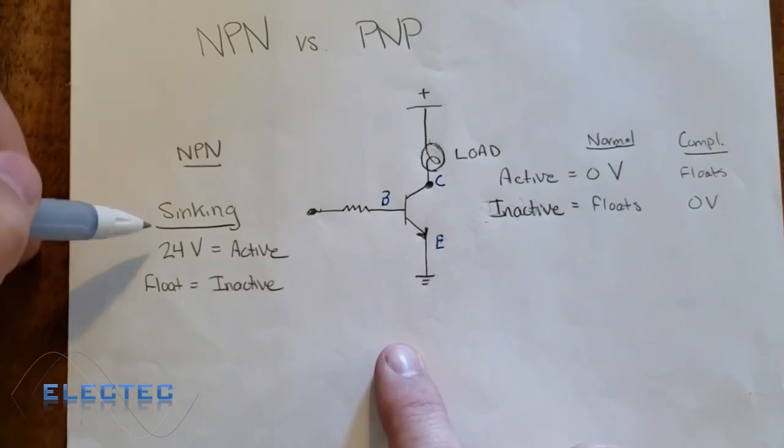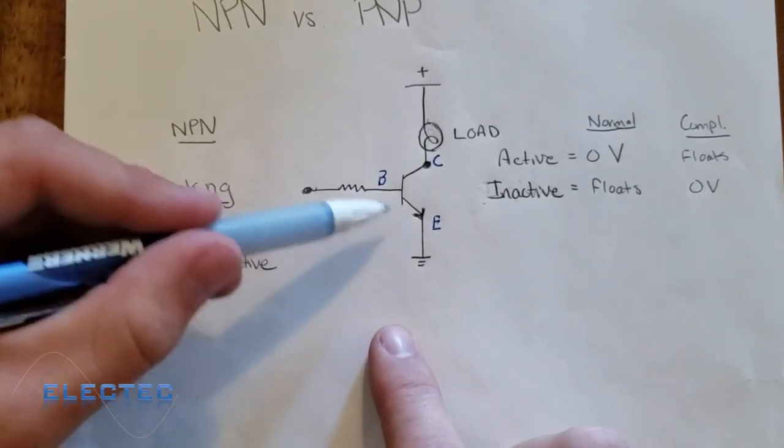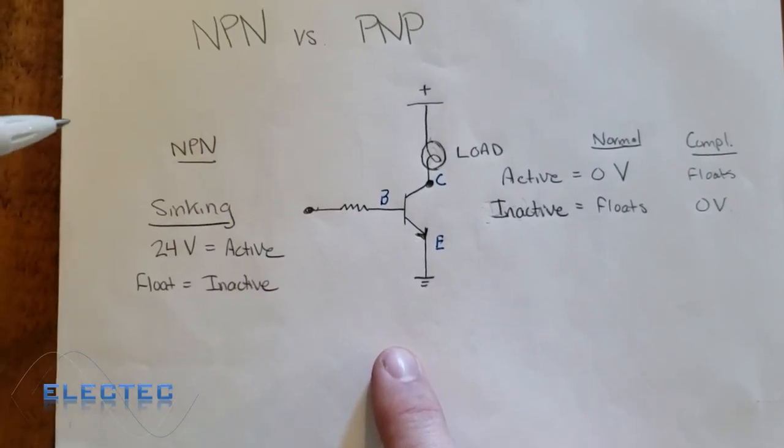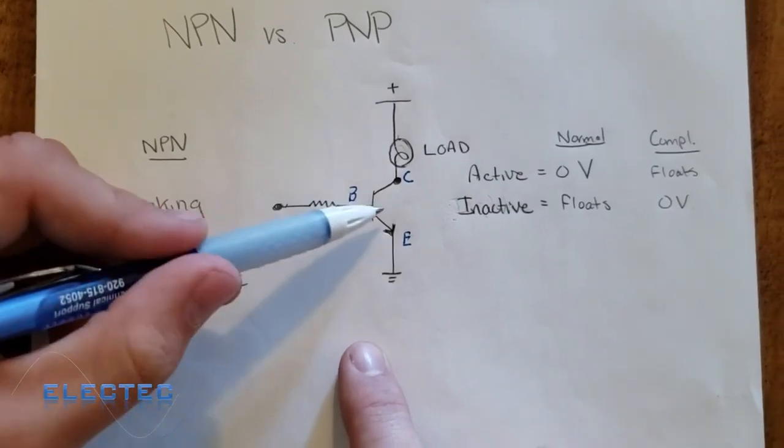In modern industry, 24 volts is pretty standard. So we source it with 24 volts, and we have to have a base resistor, but I'm going to get into that in more detail in a more advanced video. But anyways, we source with 24 volts.